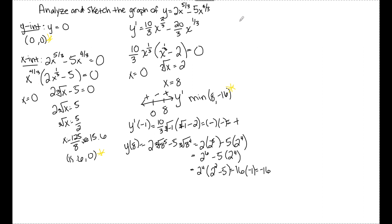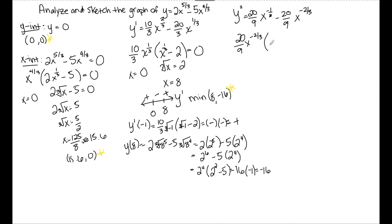Now I move to the second derivative y double prime. Taking the derivative of y prime using the power rule gives 20/9 times x to the negative 1/3, minus 20/9 times x to the negative 2/3. Factoring out 20/9 and x to the negative 2/3 — the smaller exponent — leaves x to the 1/3 minus 1 inside the parentheses. Setting y double prime equal to 0, and also checking where it is undefined: x to the negative 2/3 is undefined at x equals 0, and that factor also gives x equals 0.